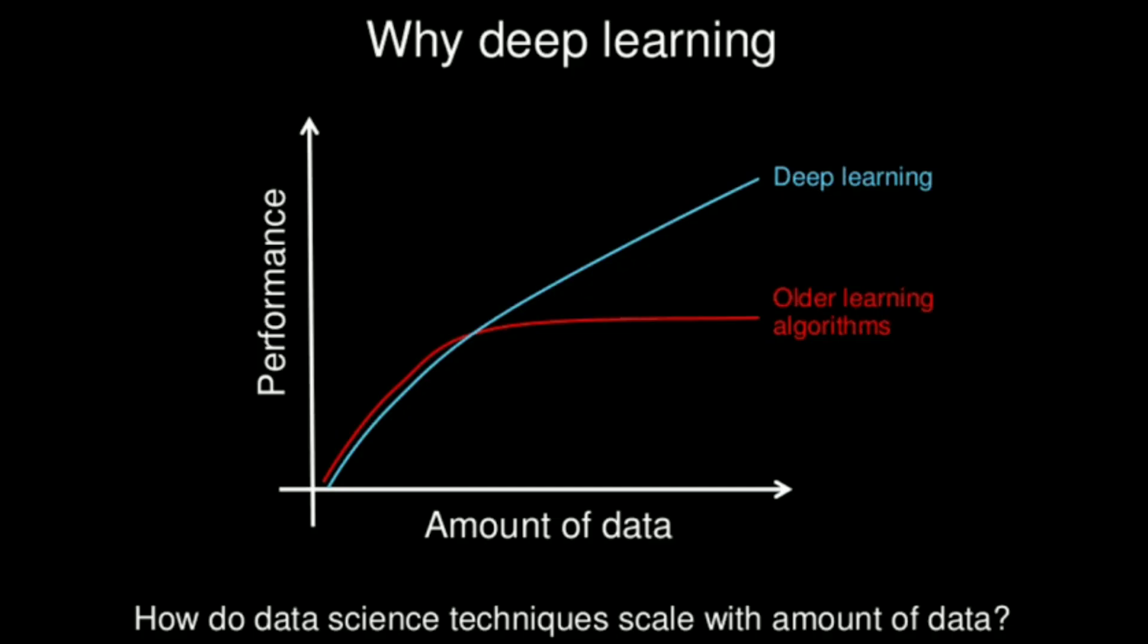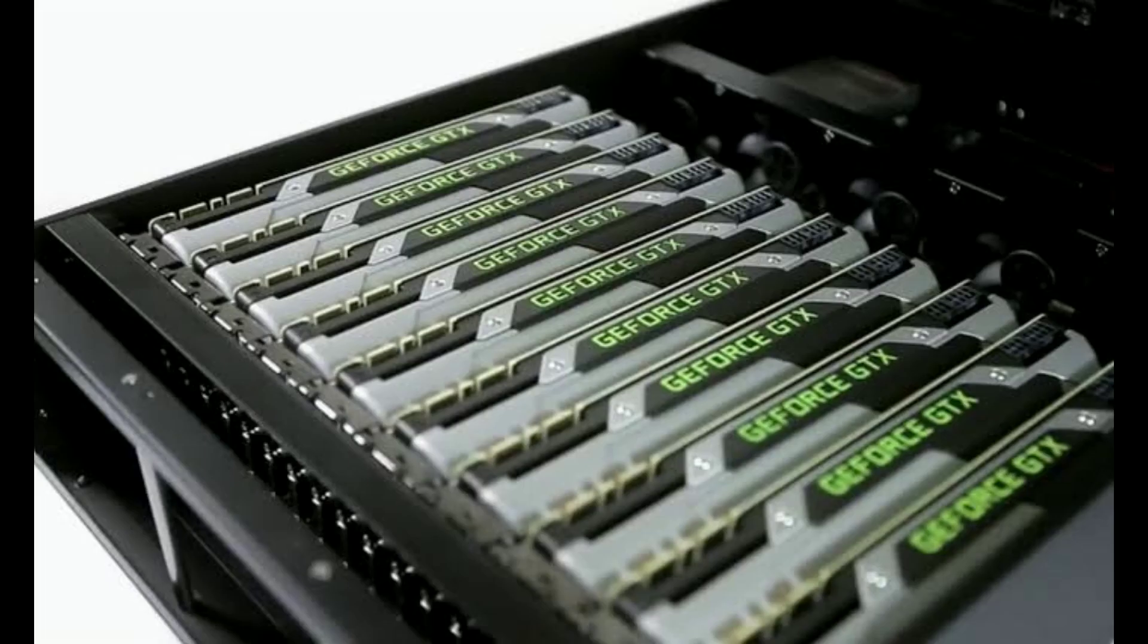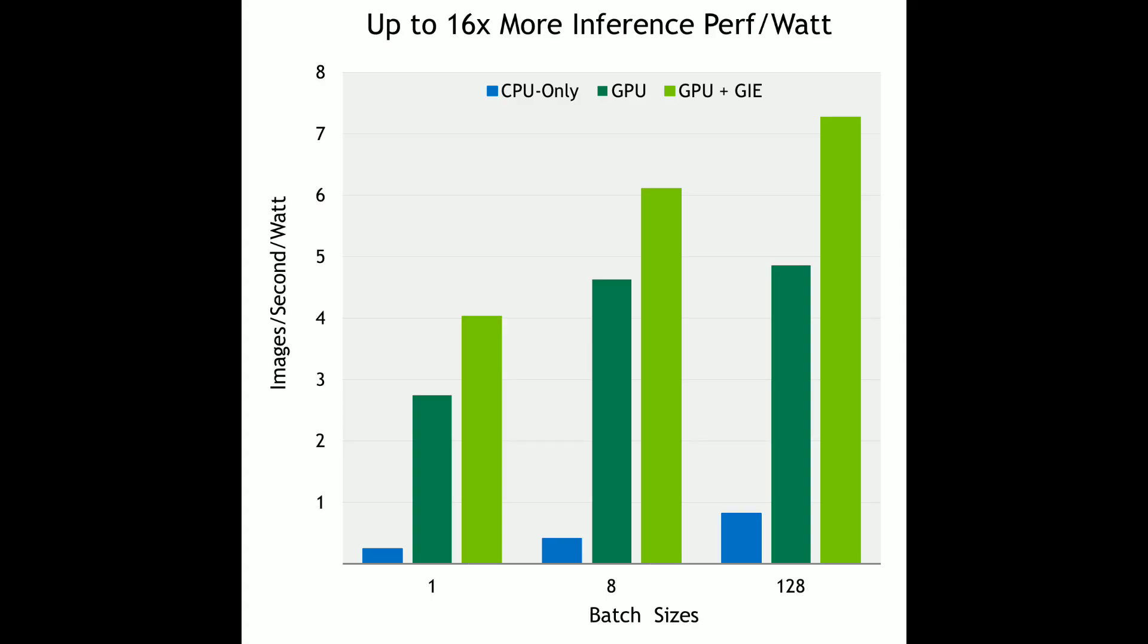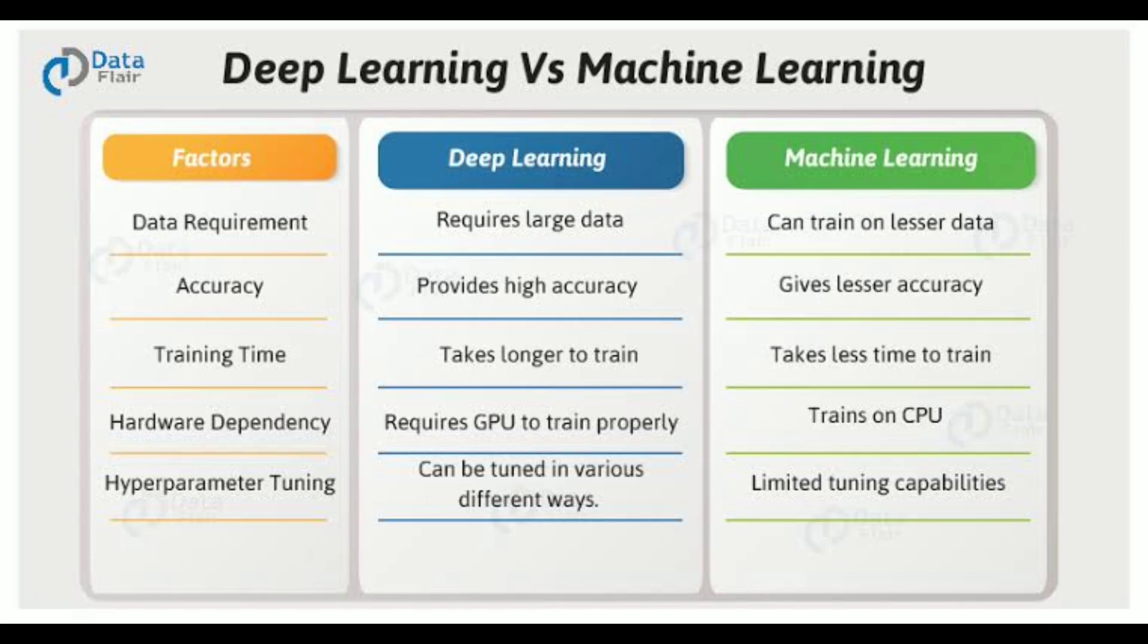However, deep learning requires massive amounts of data, and when small amounts of data are involved, ML models tend to be much more accurate. And another very important factor is infrastructure and execution time. Machine learning doesn't need as much computing power, whereas deep learning needs a GPU for proper training. And usually deep learning models take a longer, much longer time to train as compared to machine learning models.